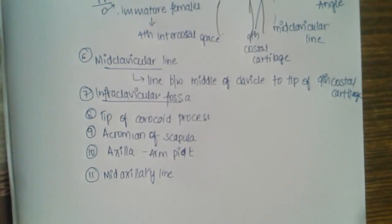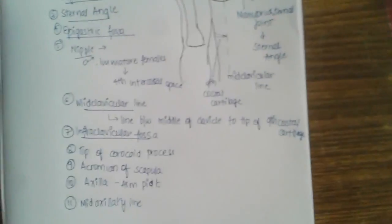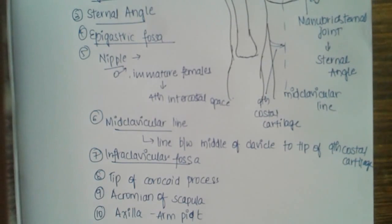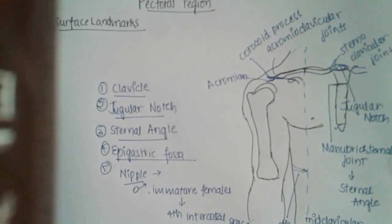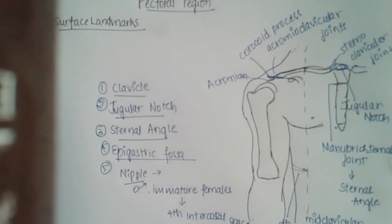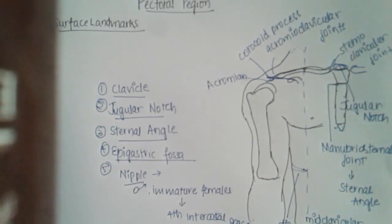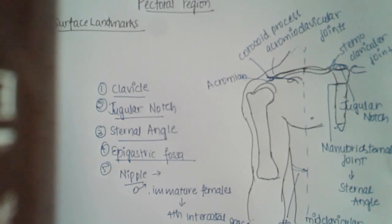All these lines and landmarks I will deal with in detail in future classes. These are all the surface landmarks of the pectoral region. Tomorrow I will start with superficial fascia, and then deal with the breast, which is the biggest and most important topic expected in your exams. If you want any changes in the way of teaching, please comment after watching the video. Bye!